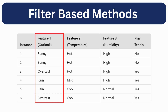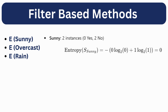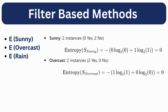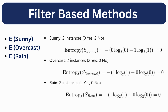The next step is to calculate the entropy of each feature. Let's start with the first feature, outlook. There are three unique values: sunny, overcast, and rain. Using the same formula, we calculate entropy for each. There are two instances of sunny, of which 0 belong to yes and 2 to no — giving entropy 0. For overcast, two instances both belong to yes, giving entropy 0. For rain, two instances all belong to yes, so we put this into the formula and get the entropy.